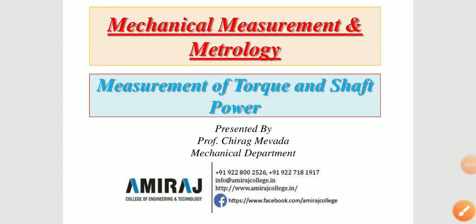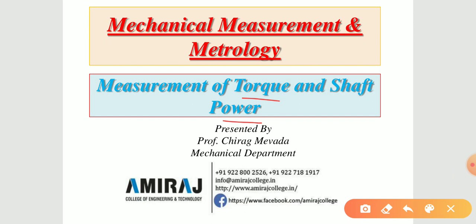Hello and welcome back everyone. In today's lecture we will discuss about measurement of torque and shaft power. The measurement of torque is associated with the determination of power developed or consumed by rotating parts. The different types of dynamometers are used for measurement of torque as well as power. The torque may be measured in terms of reaction force and arm length or angle of twist.